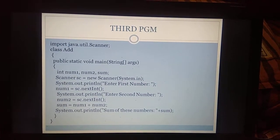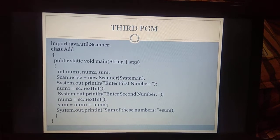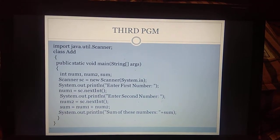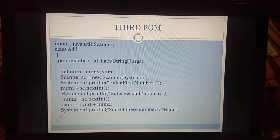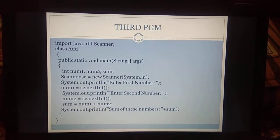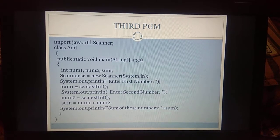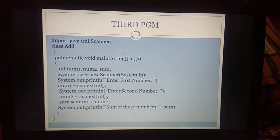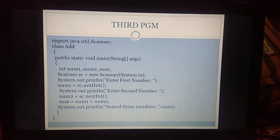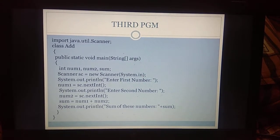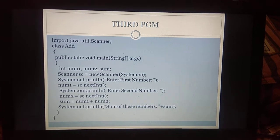Next, we are using the formula sum is equal to num1 plus num2 — doing the addition of num1 and num2 that we got from the user. We are displaying the sum as output using system.out.println 'sum of these numbers' concatenation operator plus, then displaying the result variable sum. We close the main function and then close the class 'add'. This is the third program to understand how to get input from the user — using the Scanner package, the generic Scanner class, creating an object for the Scanner class, and calling nextInt for getting integer input.